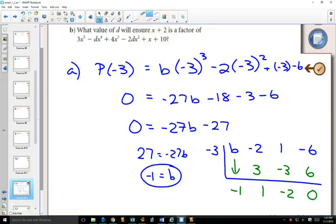And that gets brought down, so you'd be able to tell using synthetic division that b equals -1.